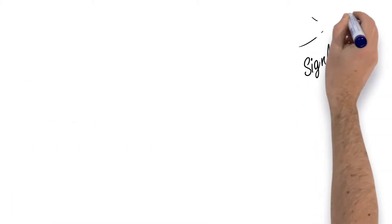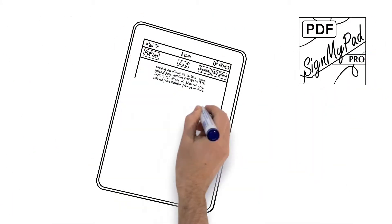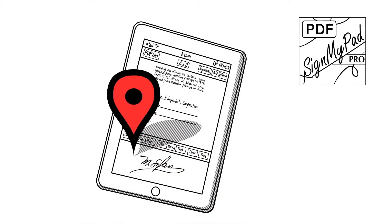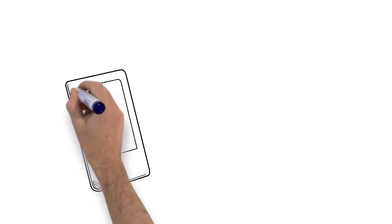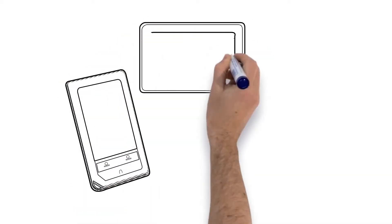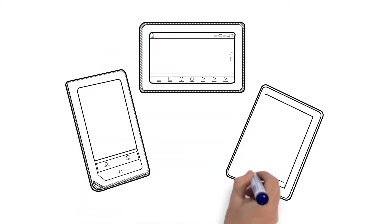Need more security? Our SignMyPad Pro version will tag your PDFs with your GPS location based on your tablet. SignMyPad is available for the iPad, Android tablets and the Barnes & Noble Nook Color.